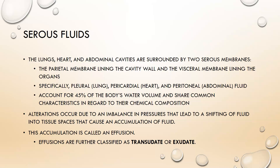For the heart, it's pericardial. The parietal pericardium makes the cavity that the heart is contained in — it's like a sac — and then the visceral pericardium is right on top of the heart. Same thing for abdominal: you just substitute with peritoneal. You have the parietal peritoneum that lines the abdominal cavity and the visceral peritoneum that lines every organ.